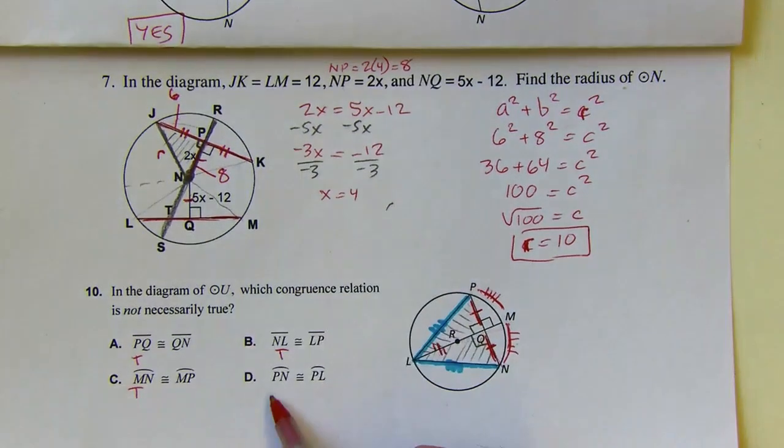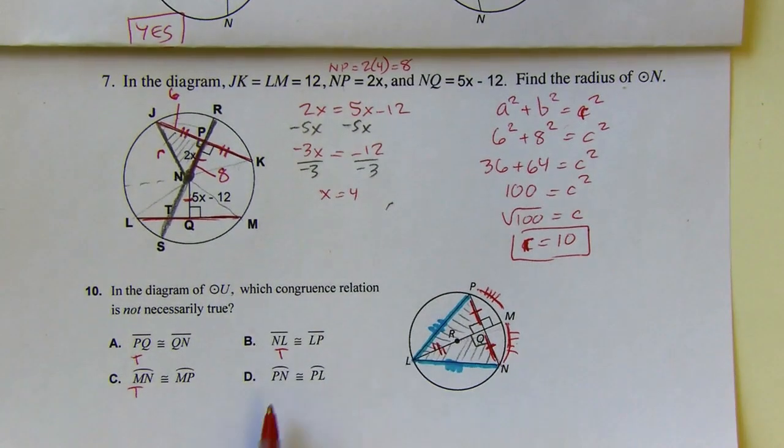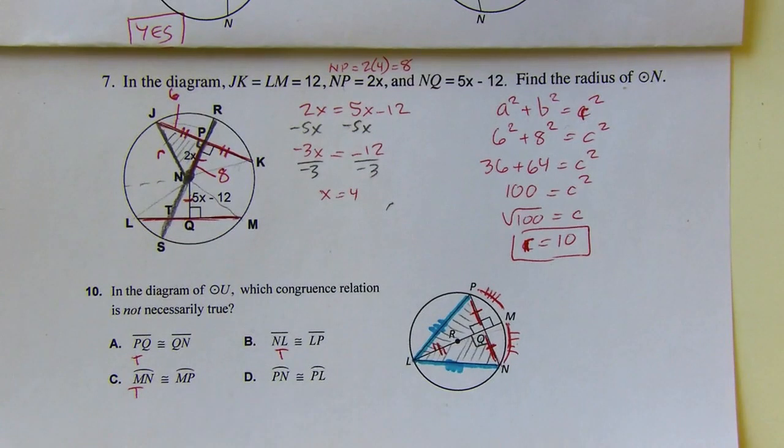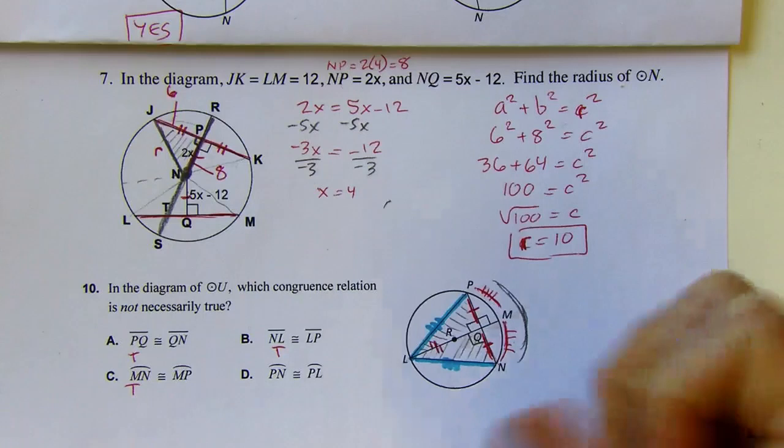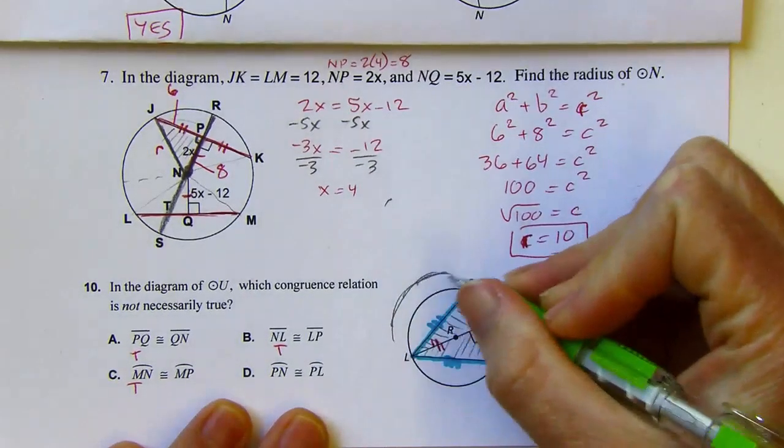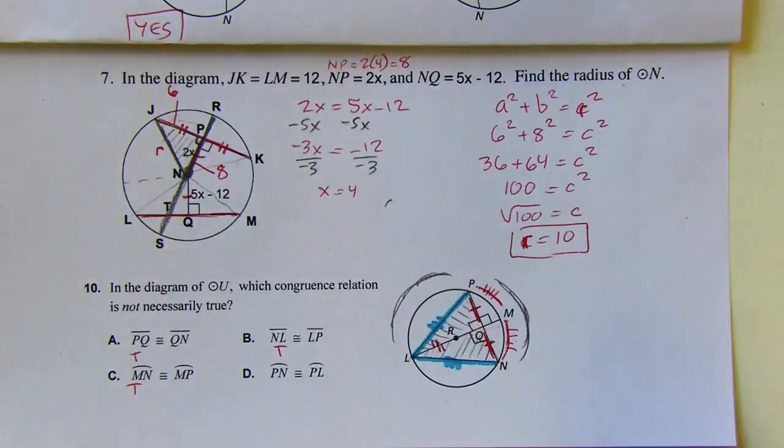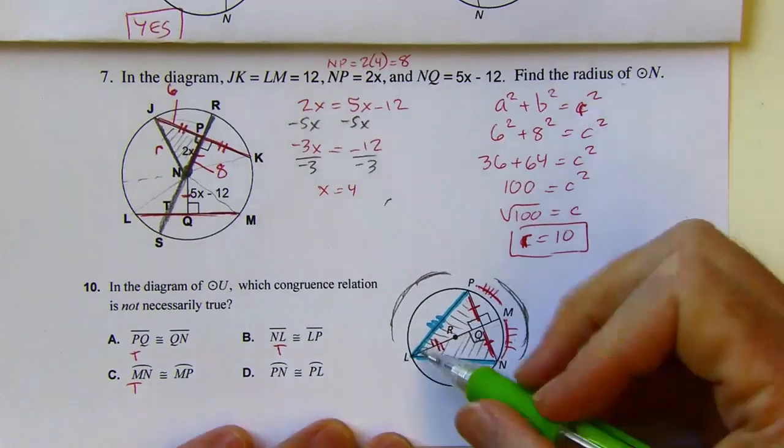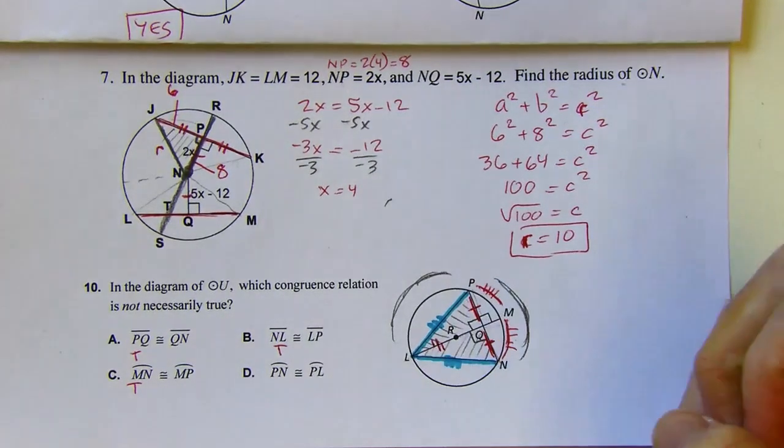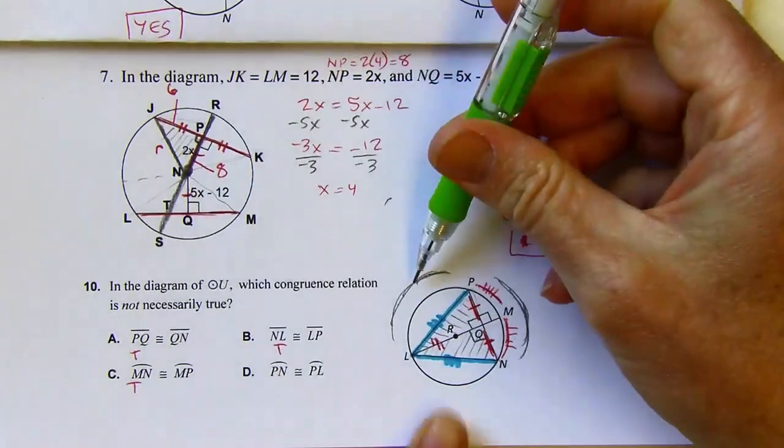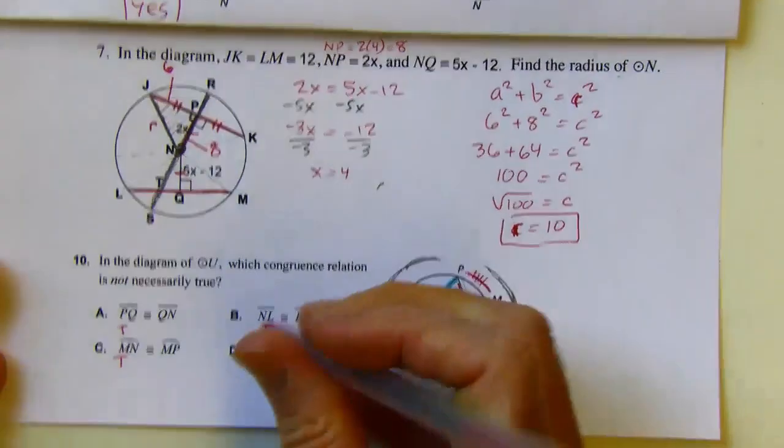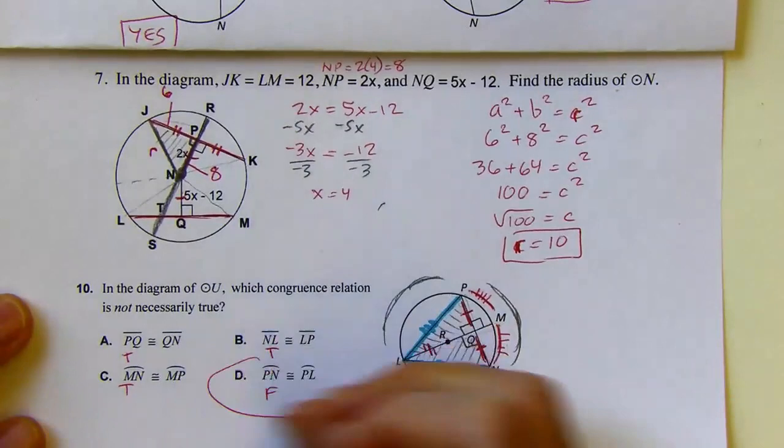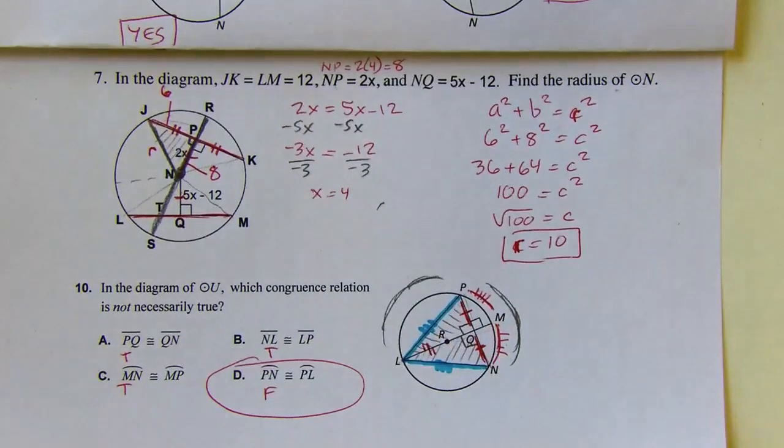So I'm pretty sure I know this one is by process of elimination. But let's look at D. This says PN, arc PN. This one right here is congruent to arc PL. So this one. Those two are congruent. Well, that's not necessarily true. If I knew that this chord was congruent to this chord, then I'd be in business. So I could say like this arc and this arc are congruent to each other. But I don't know if those two are or not. Maybe they are. Maybe they're not. I can't necessarily say they're true. So D is the option that we're looking for. Okay, and that's it for the practice assignment. I'll see you next time.